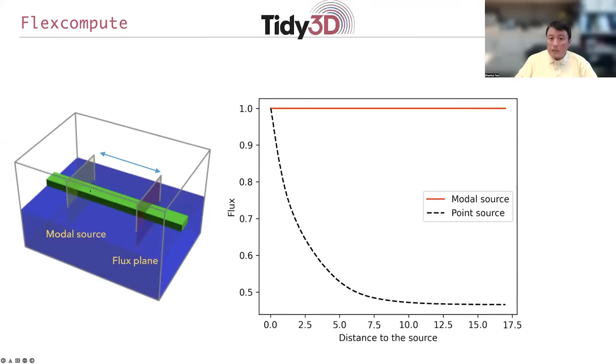In the case of a modal source, because we launch a single waveguide mode perfectly, the flux basically remains the same as the propagation distance changes.